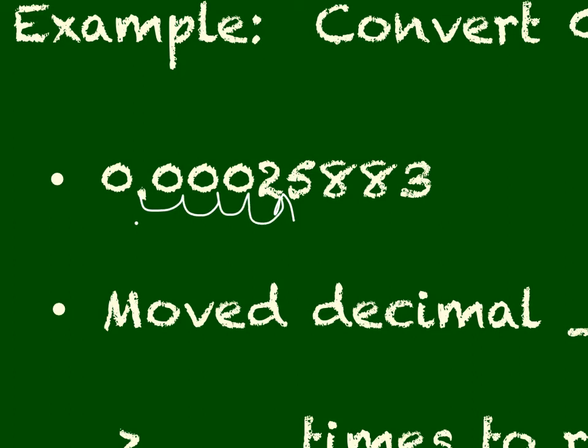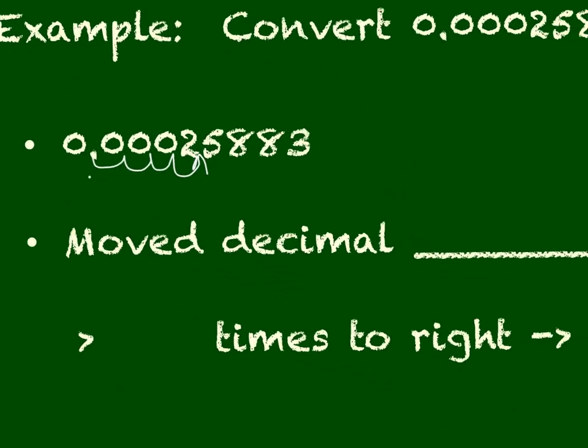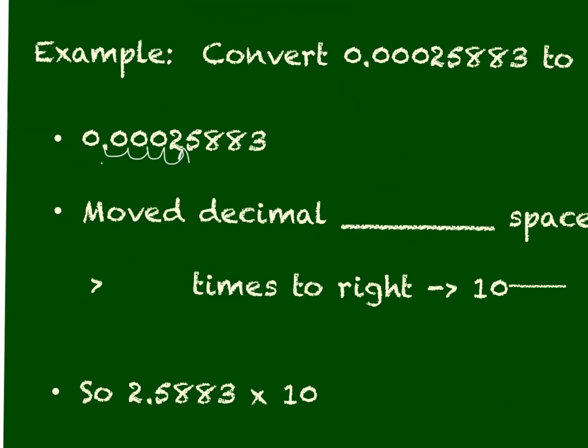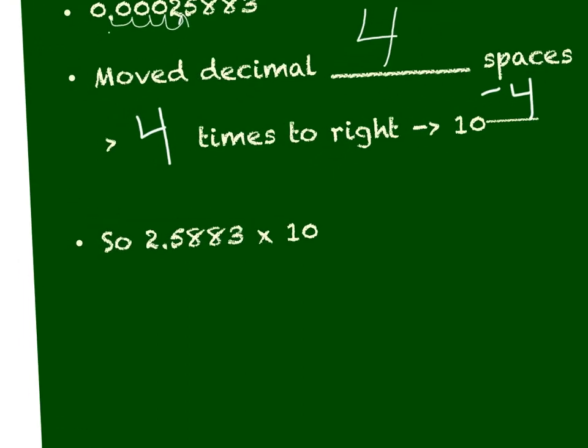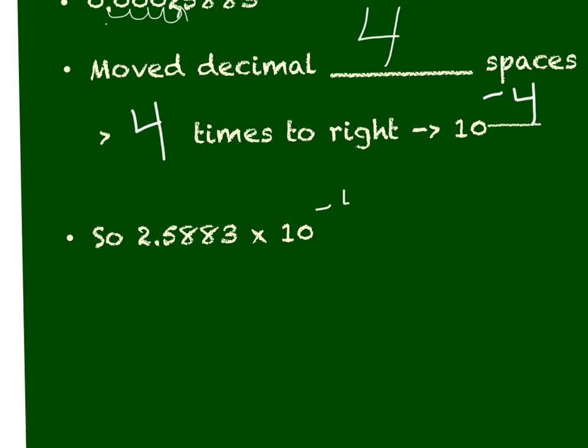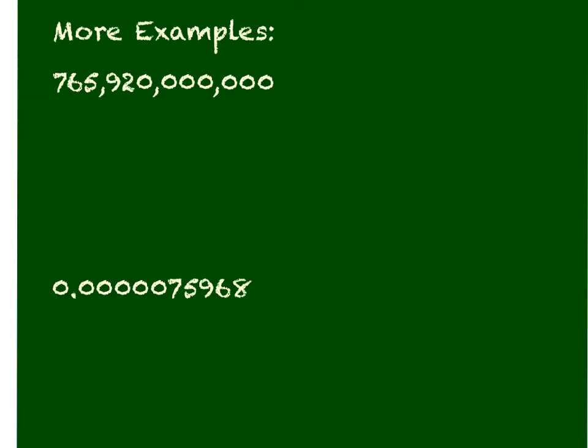So I've moved my decimal place 4 spaces. But again, it's a small number. So I've moved it 4 spaces here. But it is a small number which is going to equate to a negative 4 in my powers. Because it's making this number that's really small appear a little bigger than it is. And so when we write our final answer in scientific notation, we want that negative 4 power there.